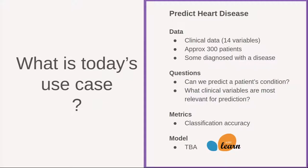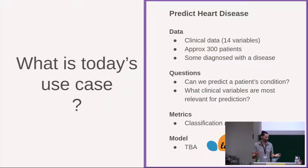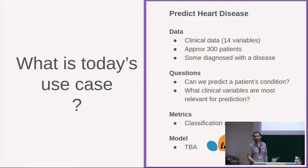We would also like to know which of these medical indicators are actually important, because usually you do machine learning to support some kind of decision-making process. In the clinical context, this can be rather expensive to make all these measurements, so it is interesting to see which indicators are actually of value when you want to make a prediction. We will need a metric that tells us whether our model is able to answer the questions we are asking. We ask whether a patient is ill or not — this is a binary classification problem. The metric we will use is just accuracy.